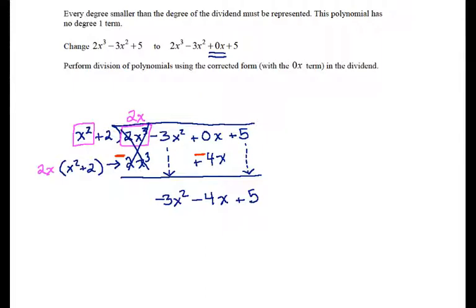Now, starting over from the beginning, first term of the dividend divided by first term of the divisor gets me a negative 3. Taking my negative 3, multiplying it by the whole divisor, I get negative 3x squared minus 6.